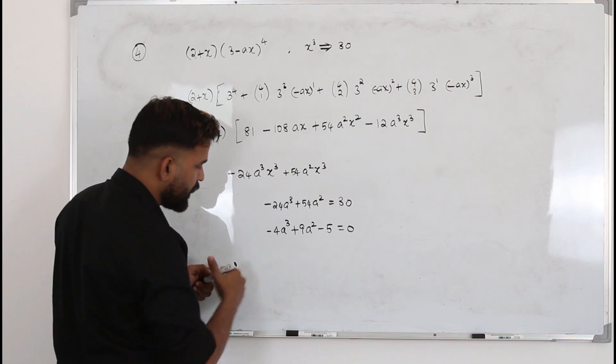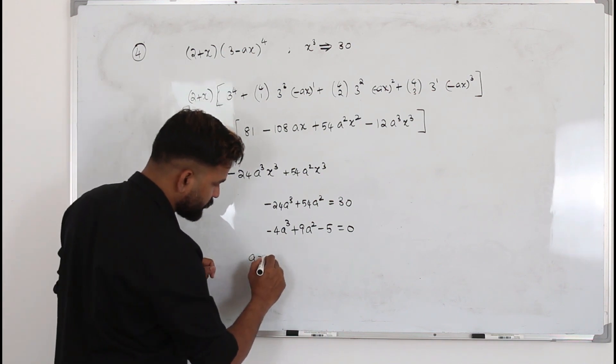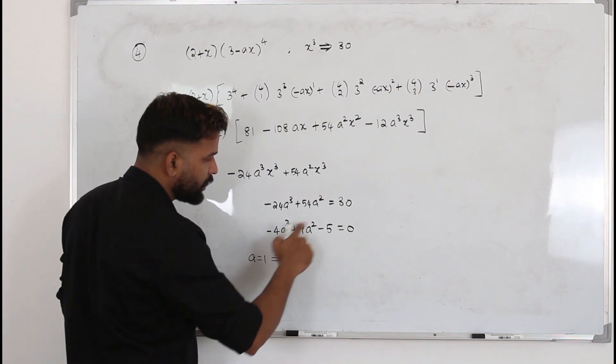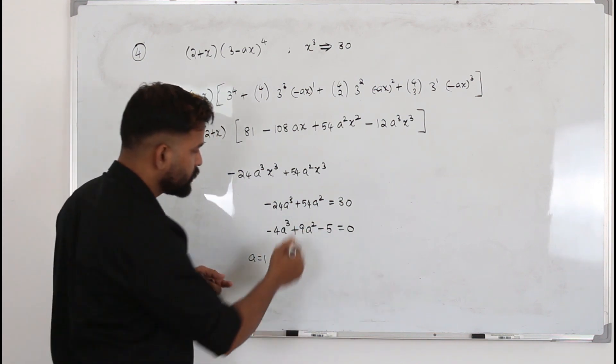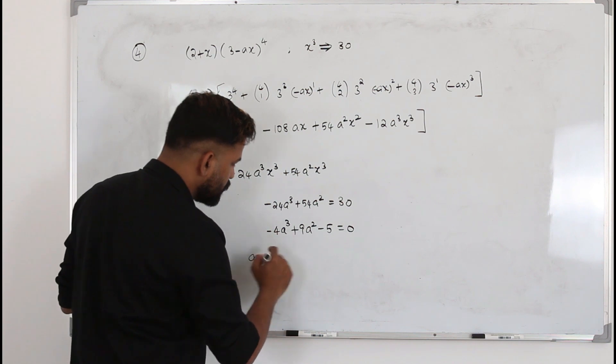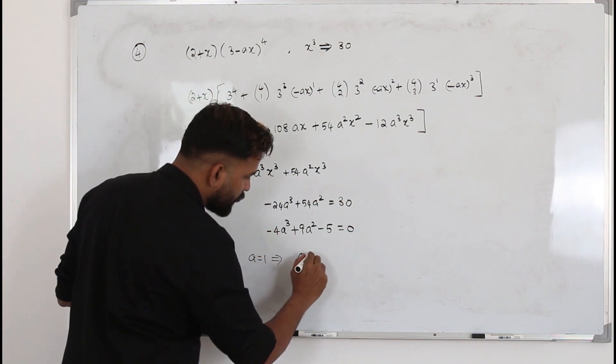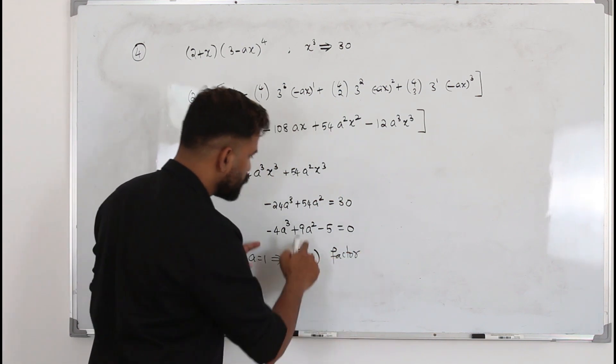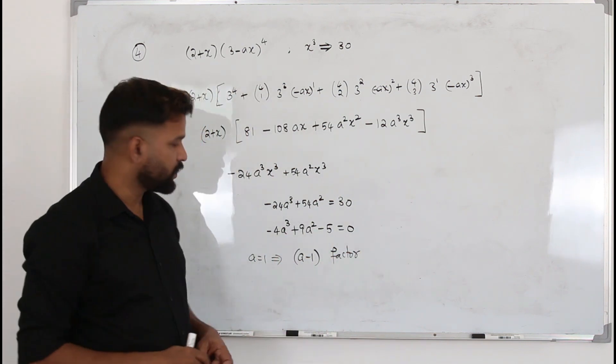For example, when I put a=1 here, it's -4 + 9 - 5, it's 0. This whole thing is 0. So definitely, a-1 is a factor of this function.